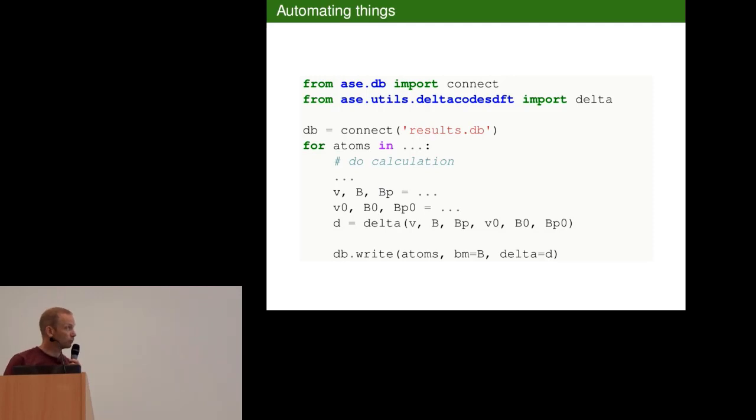How do you write the stuff to this database? It's very simple. This is your loop. You want to do a lot of calculations. Before the loop you open the connection to the results database file. You do the calculation, do some analysis, for example calculate this delta factor. And then you write the atoms and whatever you want extra. So it's very simple.